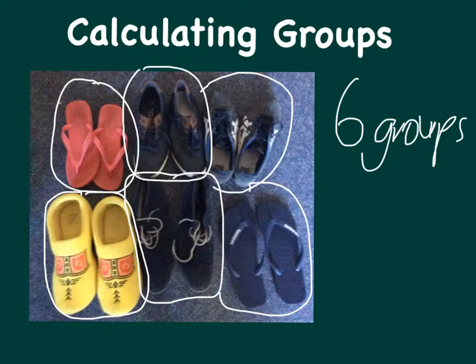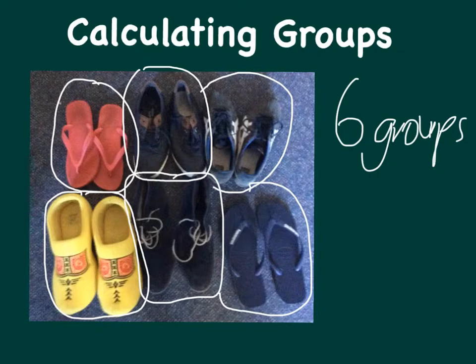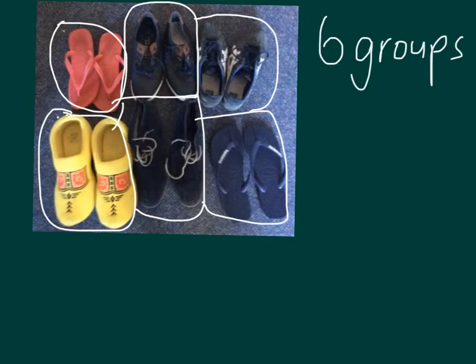Let's go and count them. One, two, three, four, five, six. So there are six groups. Who can tell me how many shoes there are altogether? How many shoes would there be altogether? So we've worked out how many groups there are, now I want to know how many shoes in total does Mr. Graham own? He has six pairs of shoes. How many in total does he own?